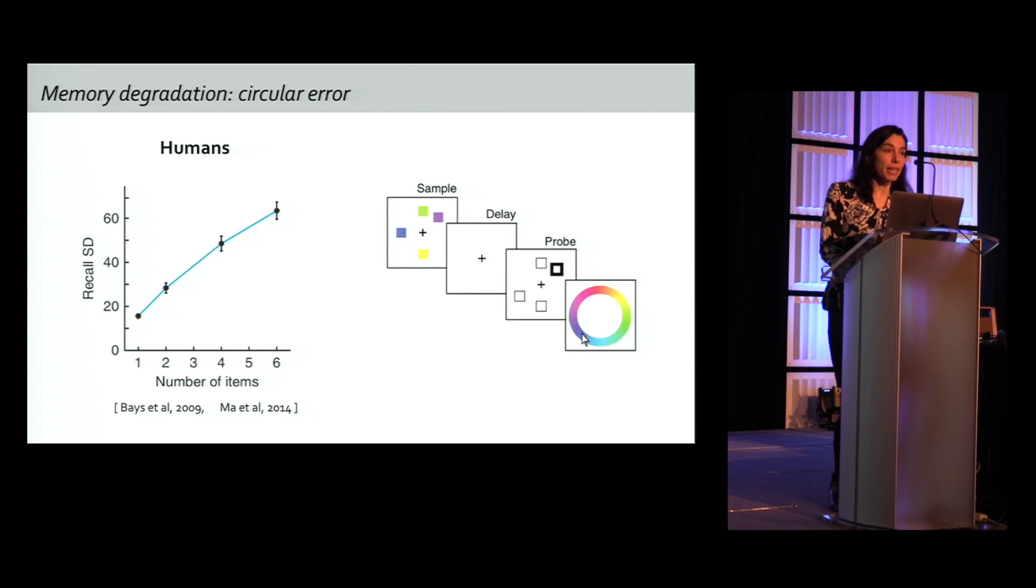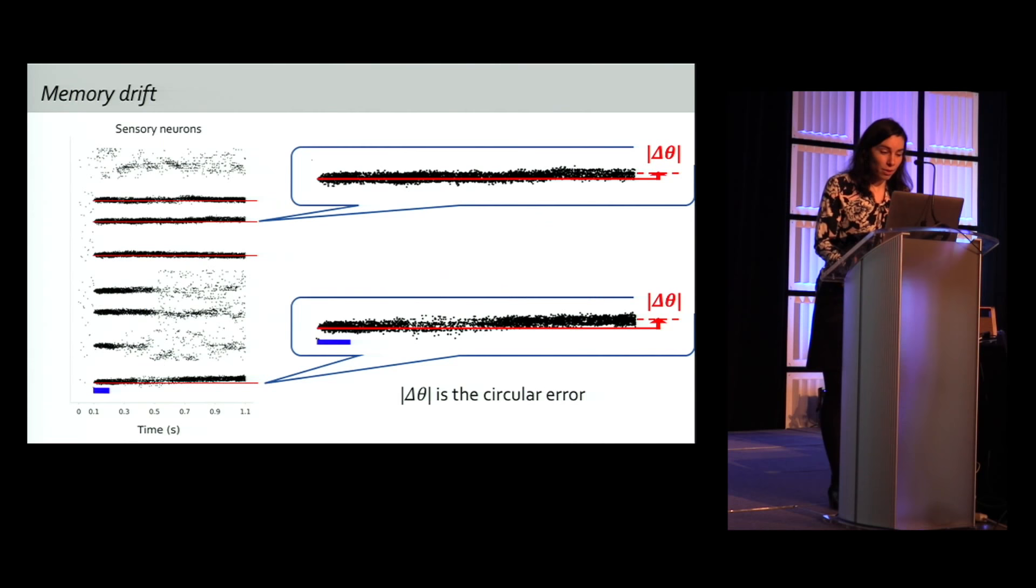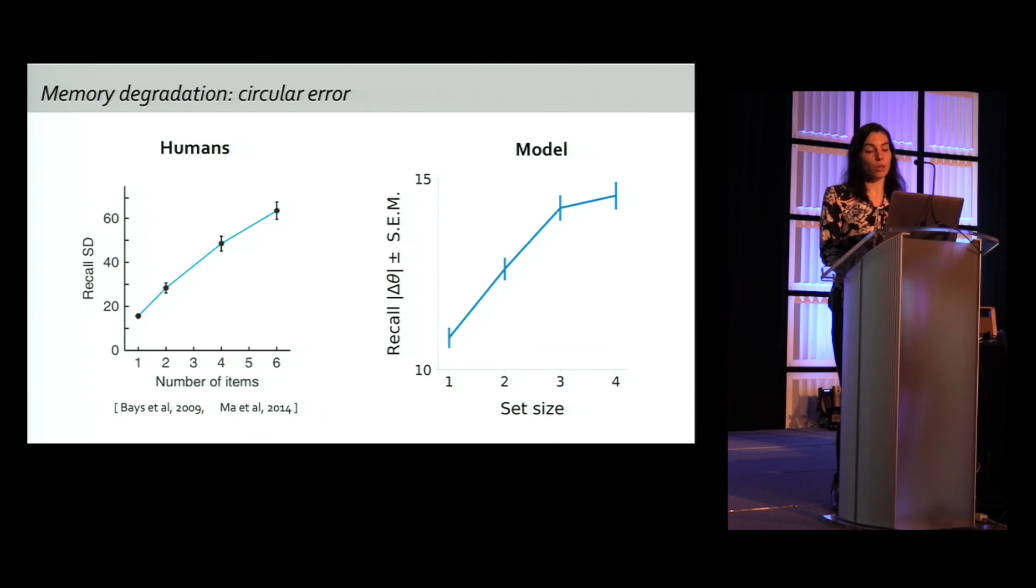Another key aspect of working memory capacity is memory degradation. In the study subjects, they had to maintain a sample of color squared on the screen over a delay. And they were probed for one of them. And the difference between the real color and the color reported provides the circular error of the memory. And the author showed that the circular error here on the y-axis increases when we increase the number of items in the initial sample. If we look at the rest of the plot of our network, we can see that the memories are drifting over time. And due to the accumulation of noise in Poisson firing. And we can compute a circular error from this drift. And we were able to reproduce this parallel increase on the imprecision of recall as a function of load. Again, this is explained in the network by increased noise from interferences between memory representation.